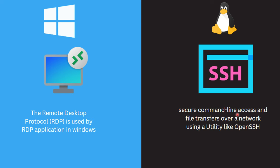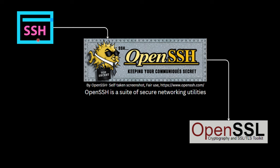RDP is a Windows protocol that uses encryption, and using the RDP application you can communicate over the RDP protocol. Similarly, SSH is an encrypted protocol giving you command-line access to your Linux devices using a utility like OpenSSH. OpenSSH is ubiquitous in the Linux world — 90 to 95 percent of the Linux world runs on OpenSSH. Many distros come pre-installed with OpenSSH, and the server runs the OpenSSH service using the SSH protocol in the backend.